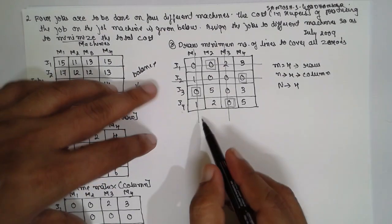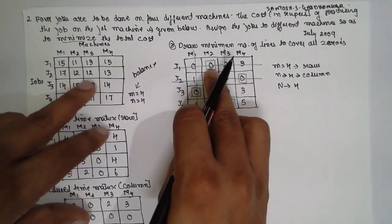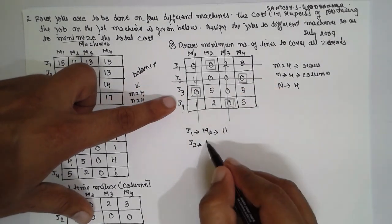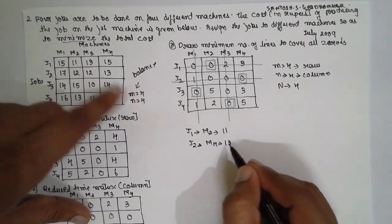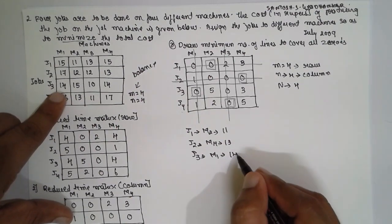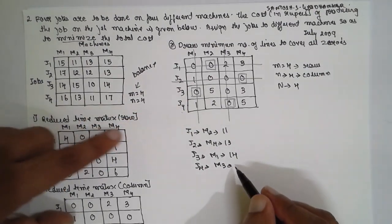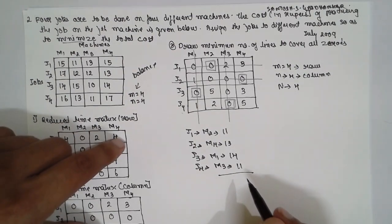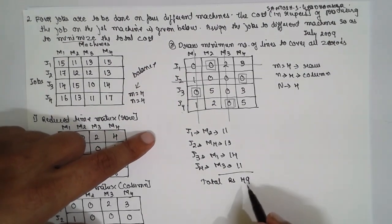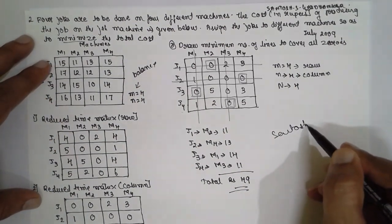Now write the original cost values for each assignment: J1 is assigned to M2 — original value is 11. J2 is assigned to M4 — original value is 13. J3 is assigned to M1 — original value is 14. J4 is assigned to M3 — original value is 11. There is no repetition in assignments. The total minimum cost is 11+13+14+11 = rupees 49. I am Suntush Gaidankar, thank you very much.